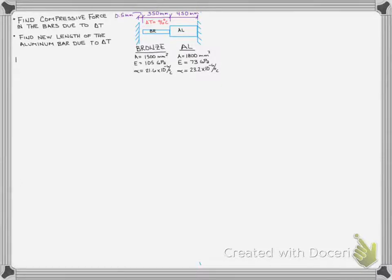And once we find what the compressive force is, after the gap closes due to the 96 degrees Celsius, what would the new length of the aluminum bar be due to that change in temperature? So the very first thing we kind of want to look at is just how much overall deformation does the system want to experience due to the 96 degrees. And we know that deformation due to temperature is going to be a function of those coefficients of thermal expansion, the amount of temperature change delta T, and the original length.